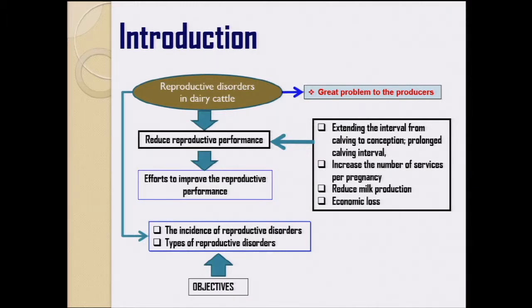The objective of this study was to know the incidence first, because this is a smallholder farm context. So we need to know the incidence of reproductive disorder and then the types of reproductive disorder.